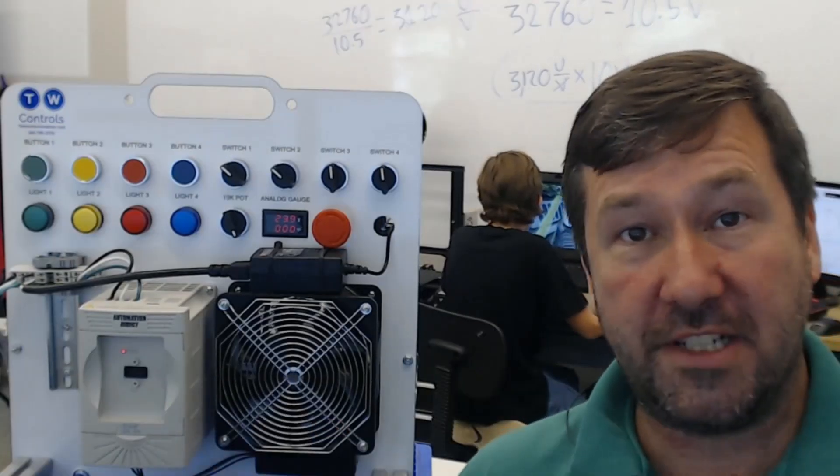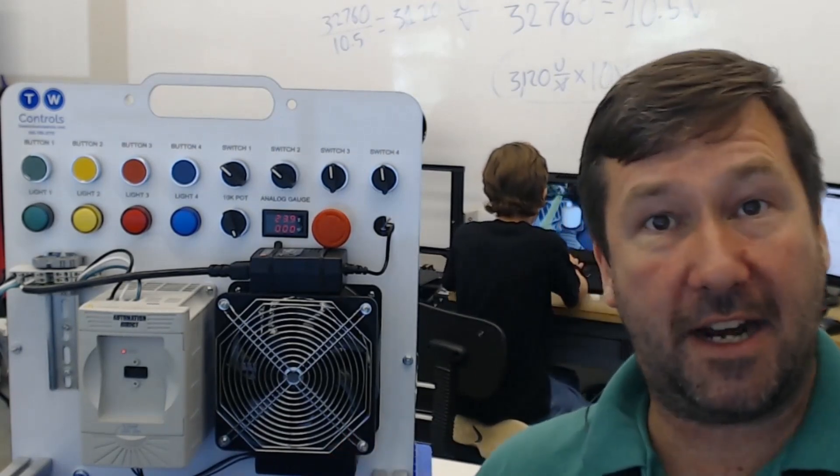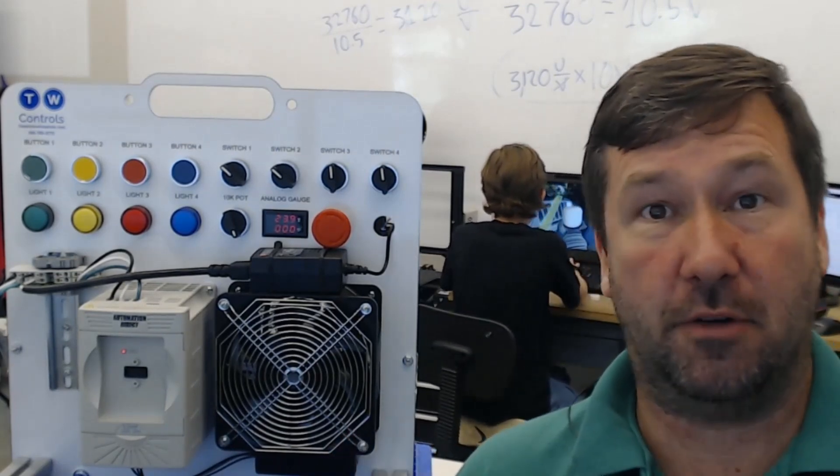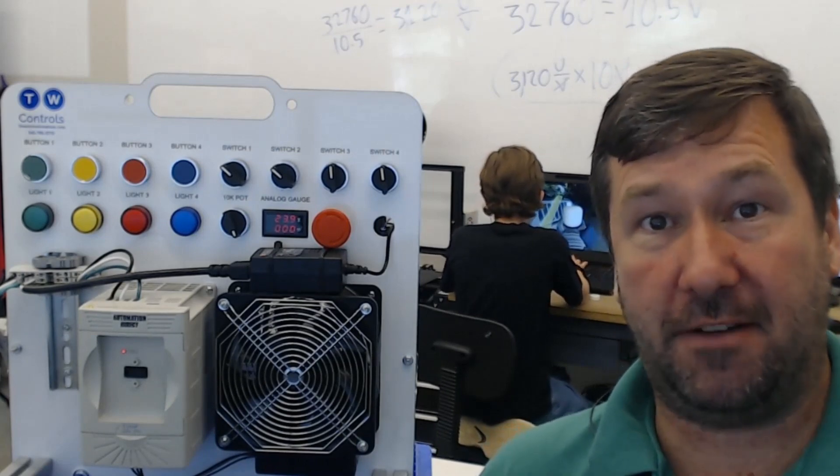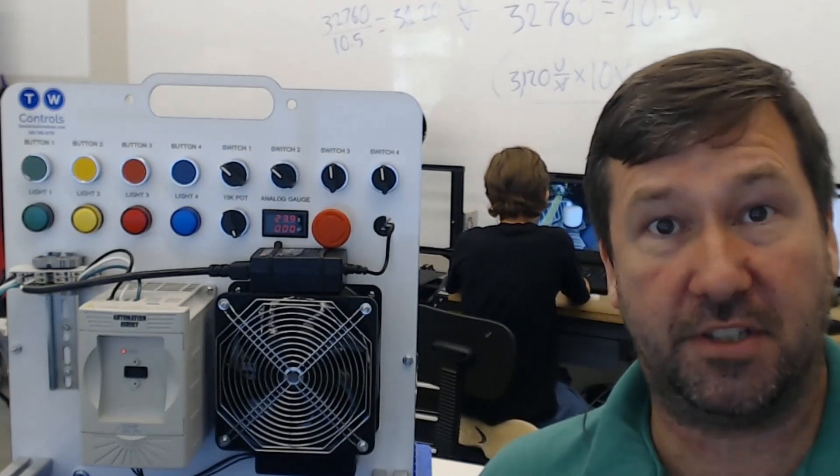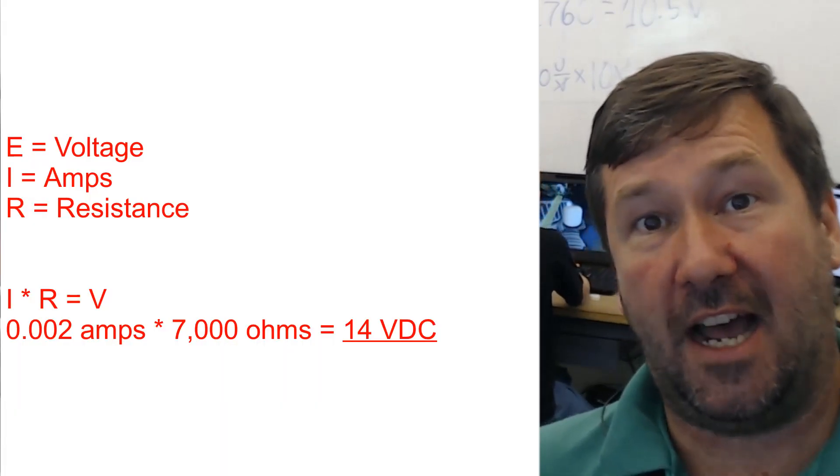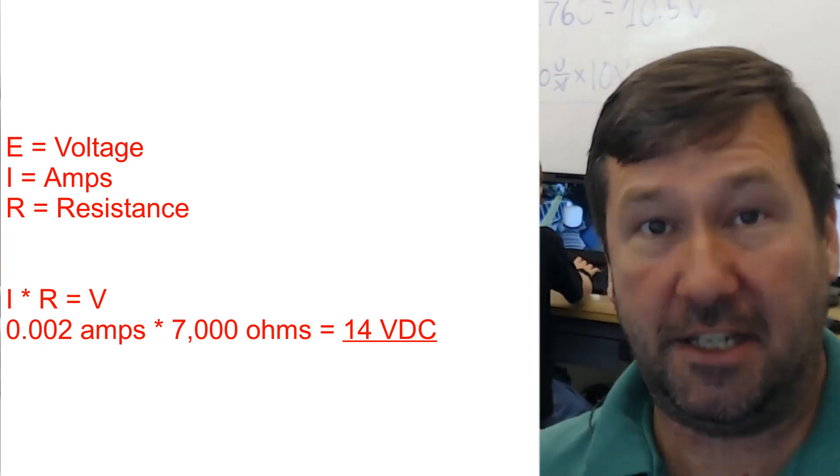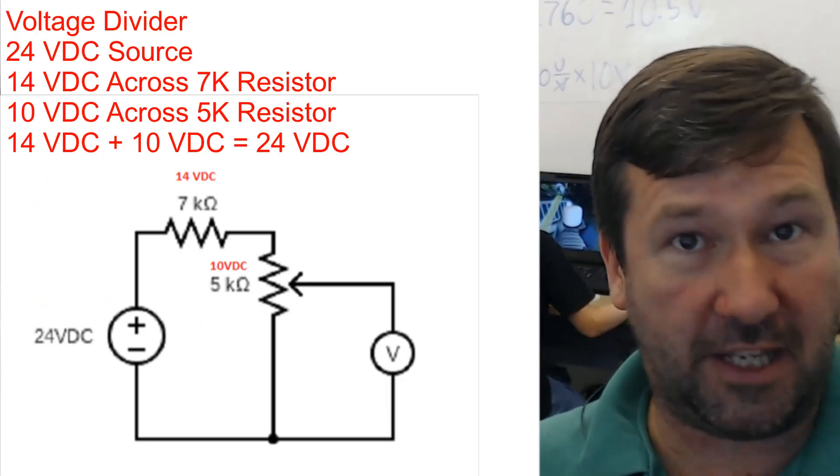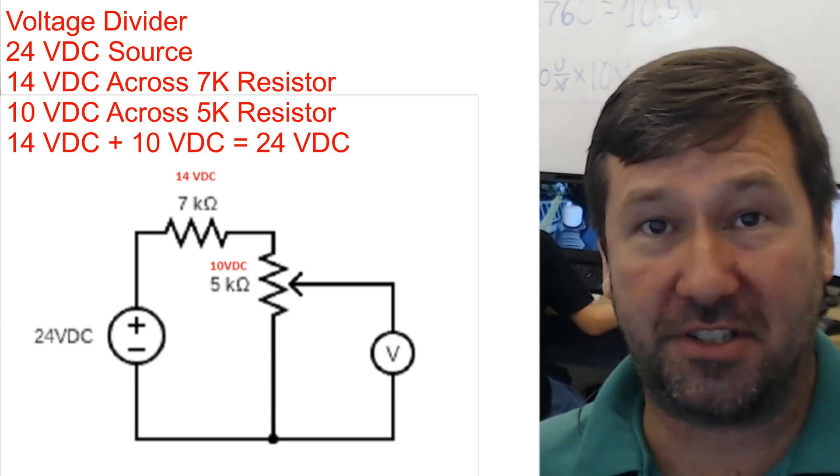Now also the reason it's called a voltage divider is because our voltage is divided up among these resistors. So if we go back and look at our 7k ohm resistor, we can plug in our same formula of voltage equals current times resistance. And two thousandths times 7,000 is 14. 14 plus 10 is 24 volts. And that is how a voltage divider works.